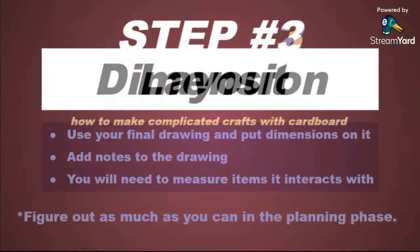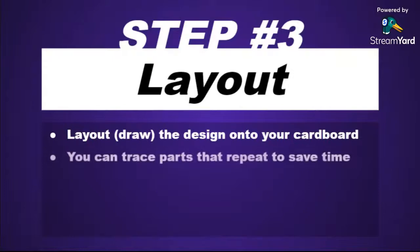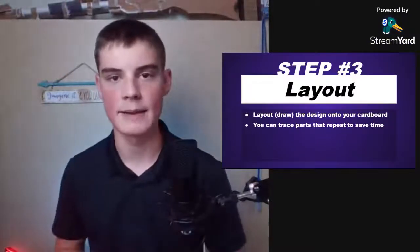But step number three is to lay out your cardboard model. And for this one, when you're laying out your cardboard model, you're drawing the cardboard model onto your cardboard, so you take those dimensions and then transfer them over to the cardboard. And then you can repeat and trace parts to save time. So if I'm going to be creating five of the same part, I'll make one, make sure it's really nice using my ruler to get a straight edge, nice and accurate.